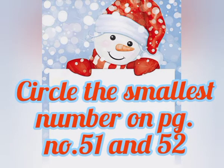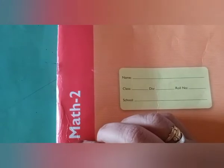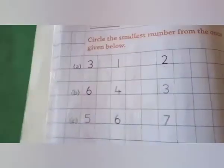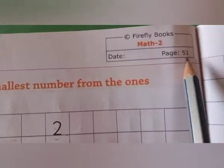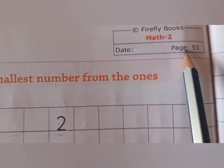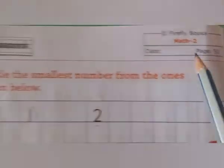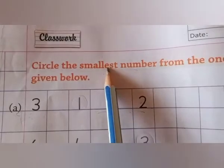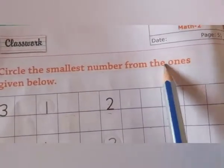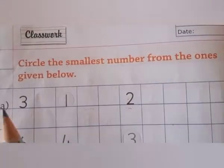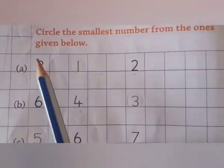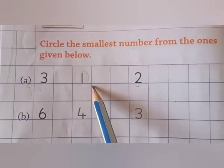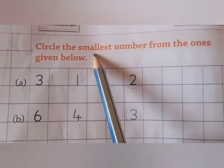Let's start. Students, open your math skill book to page number 51. Which page will you open? Page number 51. Now our topic is circle the smallest number from the ones given below.